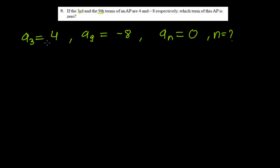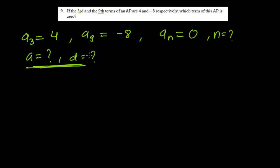So we are given A3 and A9. Always, in this type of problem, whatever we are given, by using this we have to first find out the value of A — the first term — and the common difference D. We need to find out these two values first. If we get these two values, we can find out any term easily.